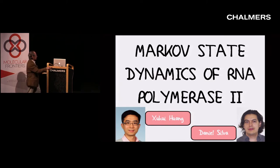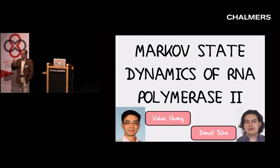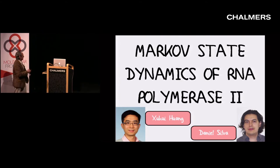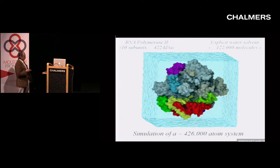One very large system we looked at is RNA polymerase. Roger Kornberg solved the crystal structure of this molecule, and Shui Huang was a postdoc in my lab and Daniel Silver is his PhD student. Shui is now an independent professor who just got tenure at Hong Kong University. Here's a movie that Daniel made which is really wonderful — it's a large system, almost half a million atoms.